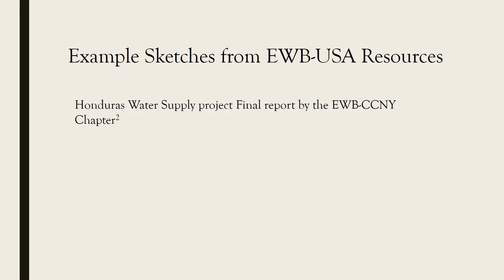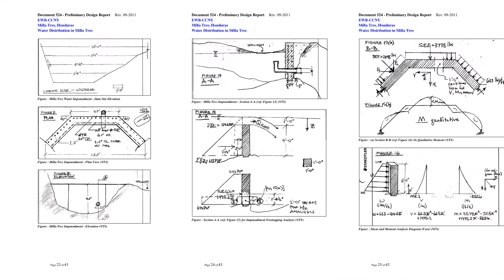We're going to look at a few examples provided by EWB USA. The first is the Wallace Applied project done in Honduras by the EWB CCNY chapter. This is a sketch of a dam, and if you look at it closely, you'll see it's very detailed — you can see everything from dimensioning to elevations to side views to top views. This is a good example of what a sketch should look like.